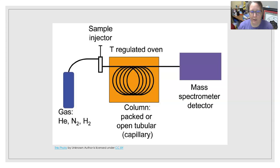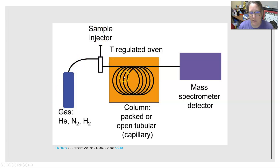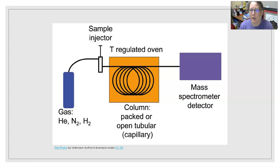In the gas chromatograph diagram, carrier gases flow through the system, a sample is injected, and it enters a temperature-regulated oven, travels through the column, and enters the detector. A mass spectrometer can serve as the detector, in which case this becomes a GC-MS — gas chromatograph mass spectrometer. Mass spectrometry will be covered in the next lesson.